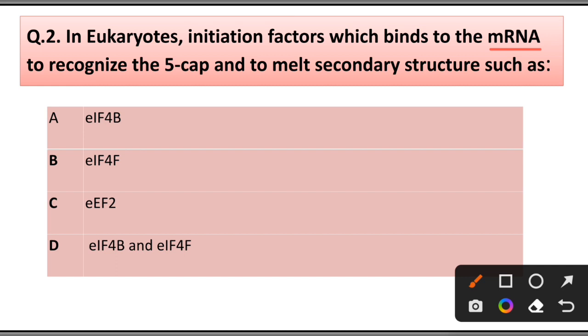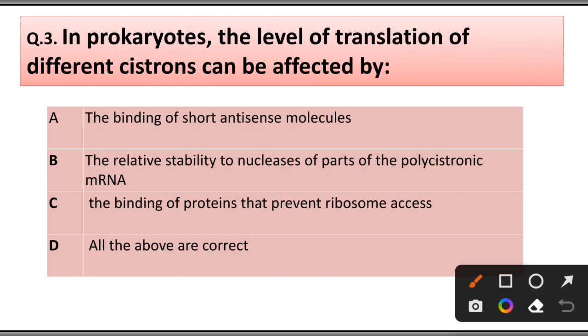Question number 2: In eukaryotes, initiation factor which binds to the mRNA to recognize the 5' cap and melt secondary structures such as: A) eIF4B, B) eIF4E, C) eEF2, D) eIF4B. Answer is option A, eIF4B.